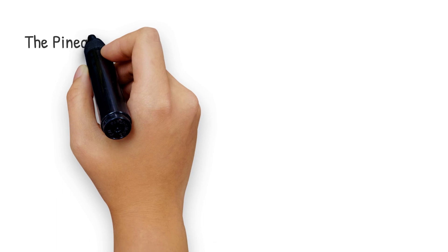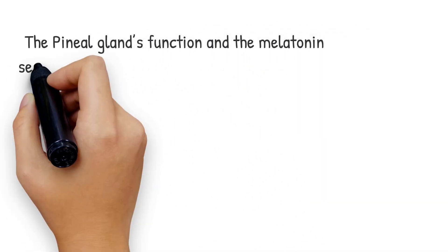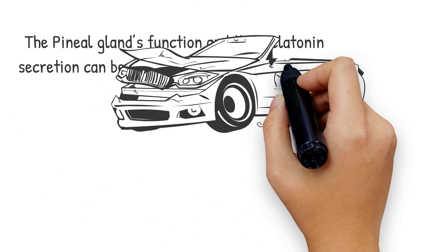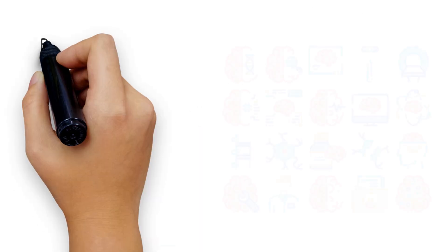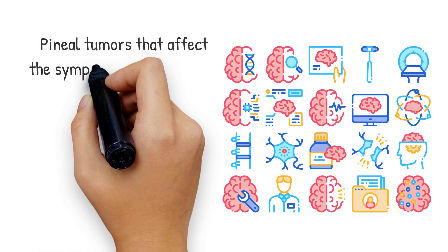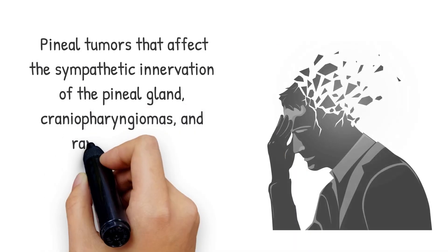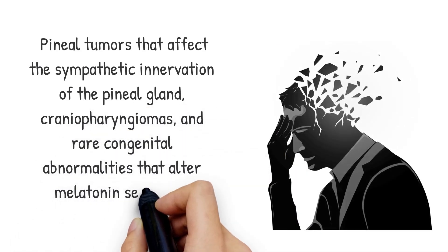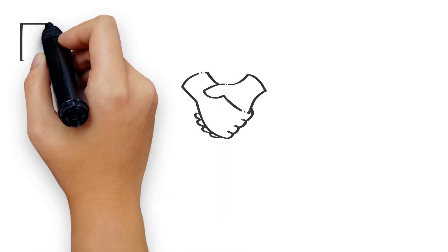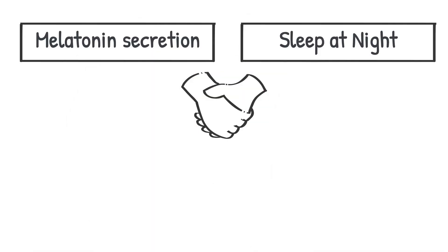The pineal gland's function and the melatonin secretion can be impaired due to accidental and developmental conditions or pineal tumors that affect the sympathetic innervation of the pineal gland, cranial pharyngomas, and rare congenital abnormalities that alter melatonin secretion. The relationship between melatonin secretion and sleep at night is not as simple as it seems.